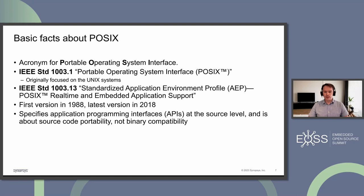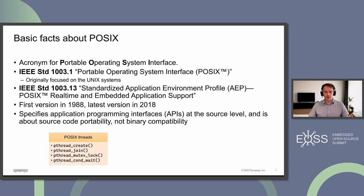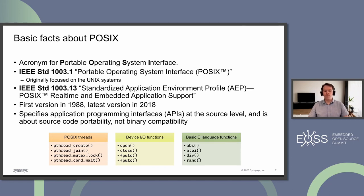What is very important for us embedded developers is that the POSIX.1 standard specifies application programming interfaces, or APIs, at the source level. That means it's about source code portability — not binary portability or compatibility. And that's fine, that's what we need in the embedded world. The APIs provided by POSIX include things like pthreads, I/O functions like open and close, and also very basic functionality which is part of the C standard or C runtime.